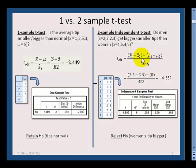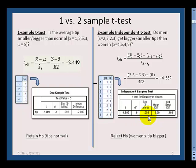Formula-wise, it simplifies to the difference between the means divided by a new measure called the standard error of the difference, giving you a t-value. In SPSS, you divide the data into two samples — men and women — and plug it in. We get a significance value of 0.003, which is below 0.05, so we reject the null and conclude that women's tips are significantly bigger.